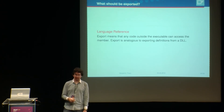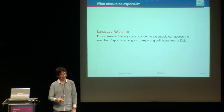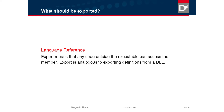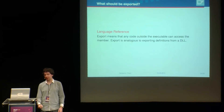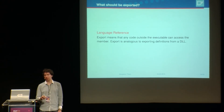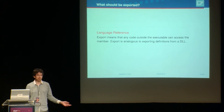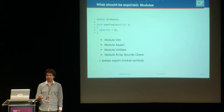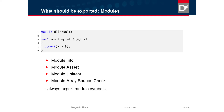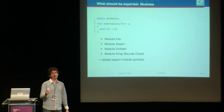Now comes the part where Linux users can listen again too. The language spec has just one sentence about `export`: 'export means that any code outside the executable can access the member; export is analogous to exporting definitions from a DLL.' That's all there is. But it's not that easy. Consider a module with a template and no `export` keyword — no member is explicitly exported. Yet there are symbols we still need to export, because the template gets instantiated on the user side.